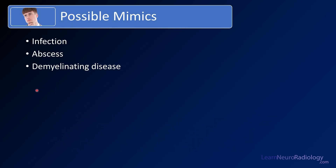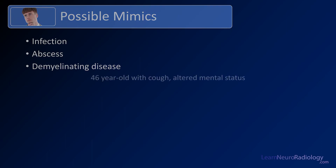The most common things you're going to run into are infection — like a diffuse infection like a virus. I've separated abscess out separately; those are going to be encapsulated parenchymal infections, so be aware of those. And demyelinating disease is also a key thing that can mimic a brain tumor.